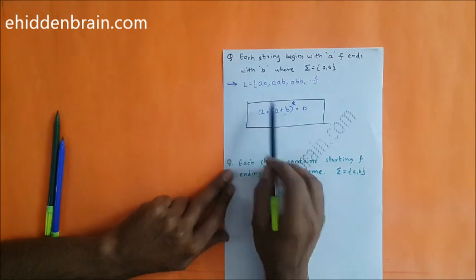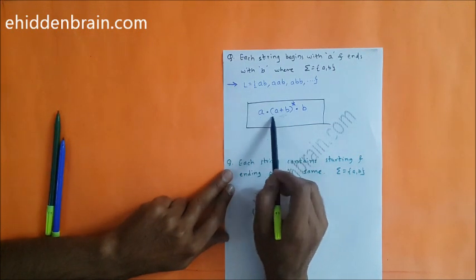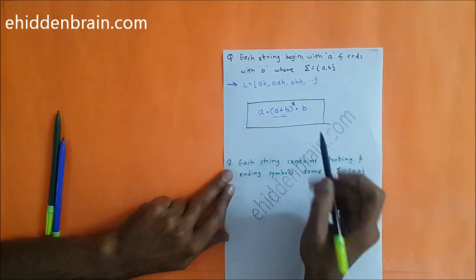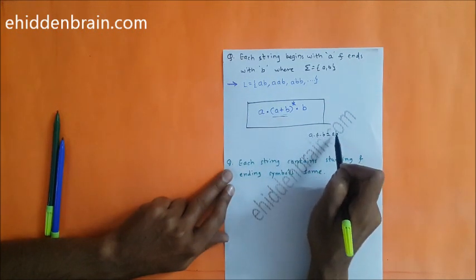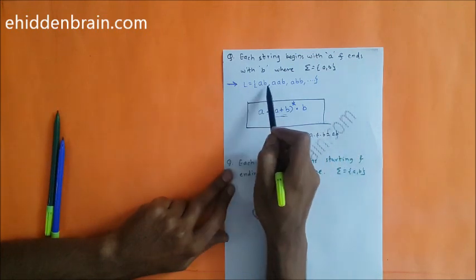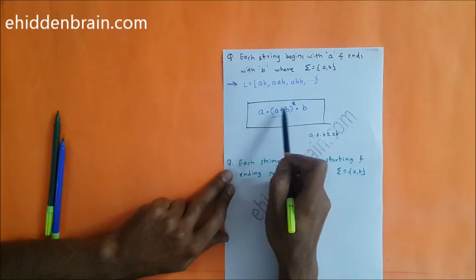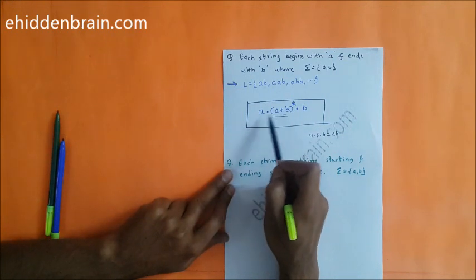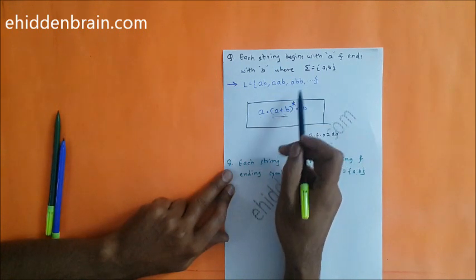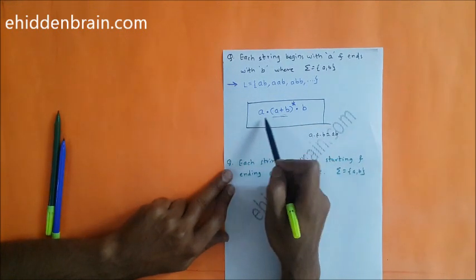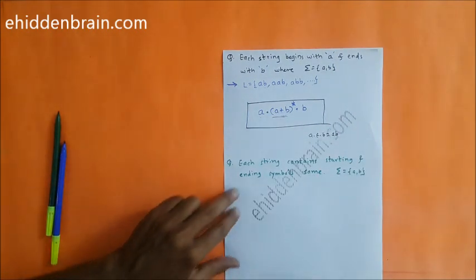Let's verify whether it generates the first string. If star is 0, it produces epsilon, so a·ε·b = 'ab' — yes, 'ab' is generated. If star is 1 and we take one 'a', then 'aab' is generated. Similarly, if star is 1 and we take 'b', then 'abb' is also generated. So the expression works correctly.